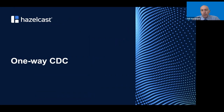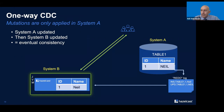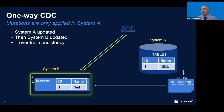Now let's come across some problems. Problem one: one-way change data capture. System A is some sort of relational database - an update is made, it goes into the redo log, it appears in Hazelcast. It's an eventual consistency system. The idea is something updates in system A and the data passes to system B, but it's only mutating in system A. System B is essentially a read-only copy of system A that is updated after the fact.